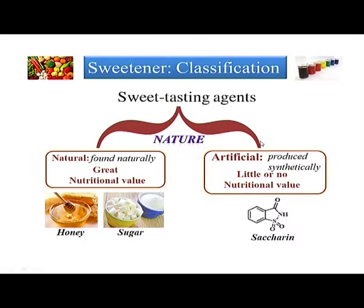We begin with food sweeteners. Sweeteners can be basically of two kinds. One type is obtained from nature — something like sugar, honey, or jaggery, which is more natural in comparison. Then there is an entirely different class of compounds which is manmade and artificial; nevertheless they are also very sweet — these are artificial sweeteners.